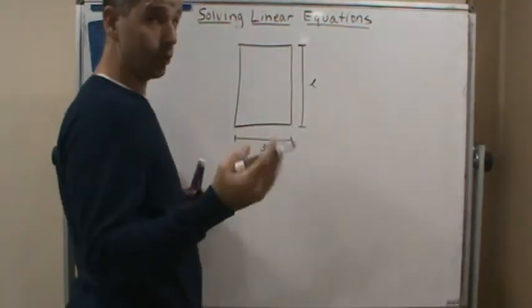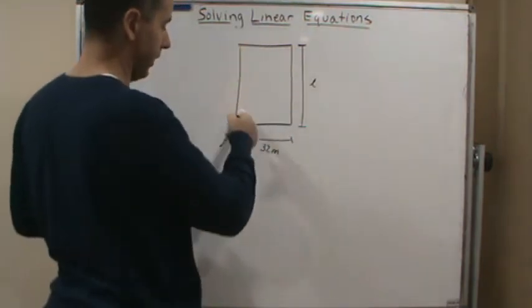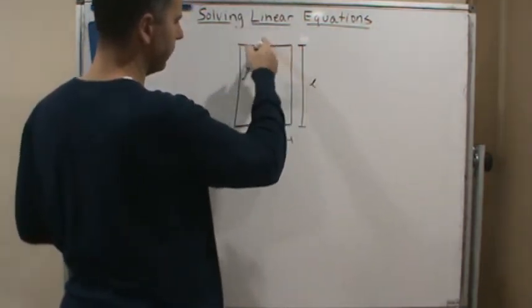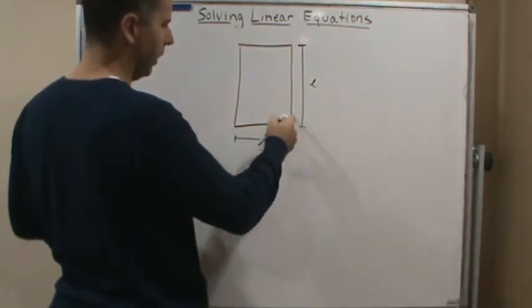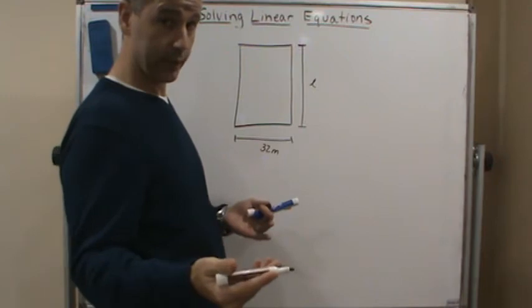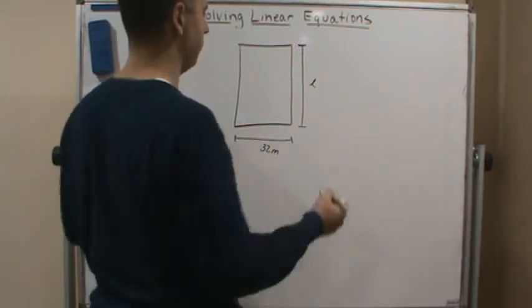So in other words, we know the perimeter of this, right? Because if we're looking at linear 158 linear feet of fence that surrounds it, well then that also represents the perimeter of the rectangular plot of land.